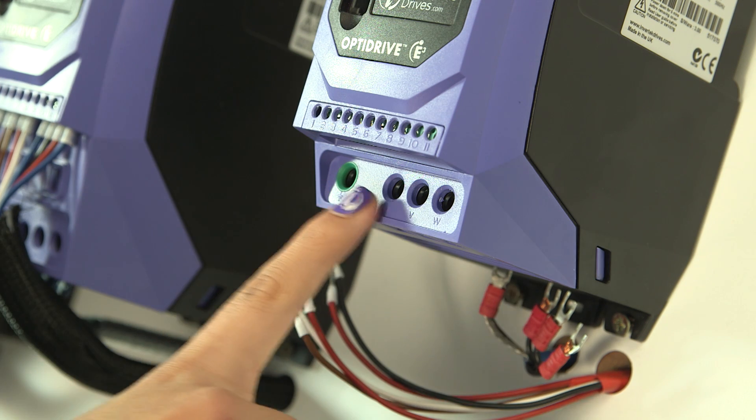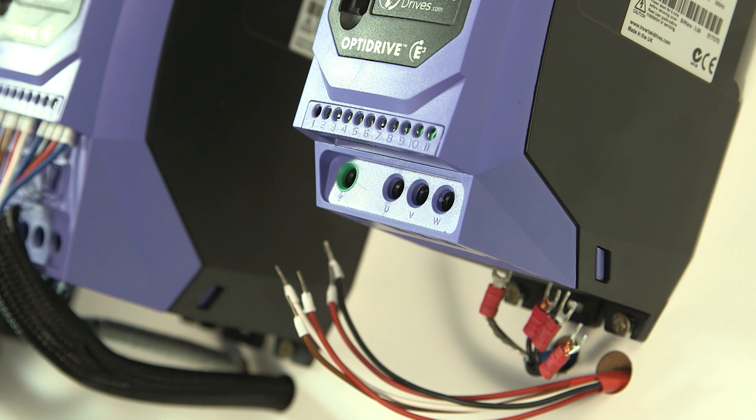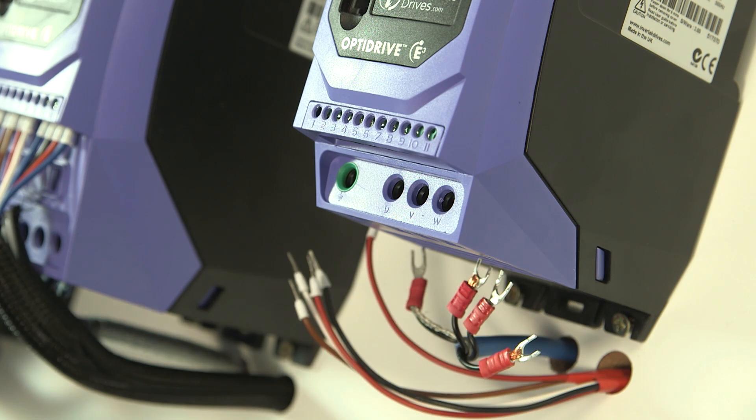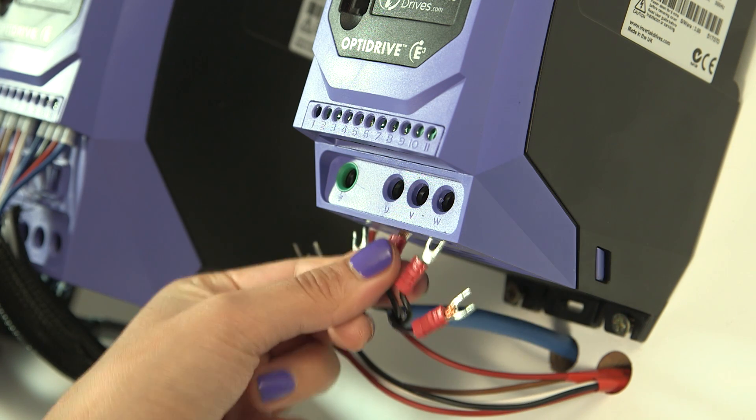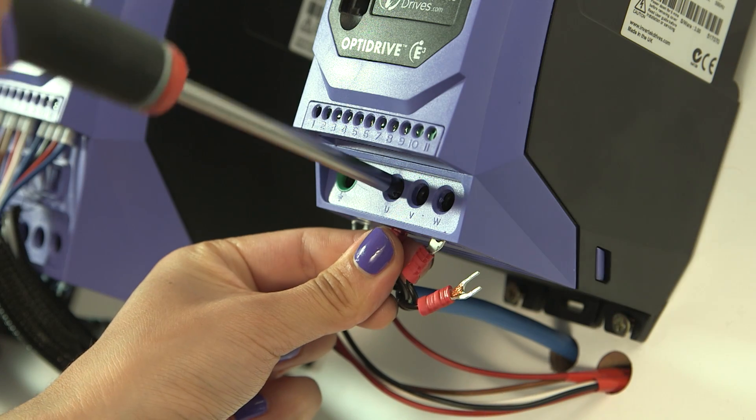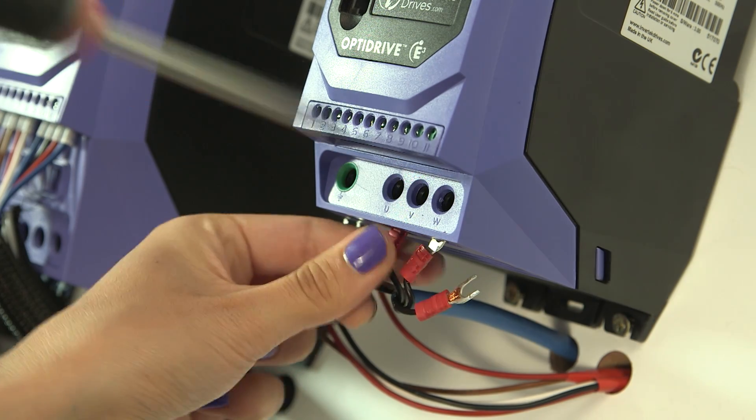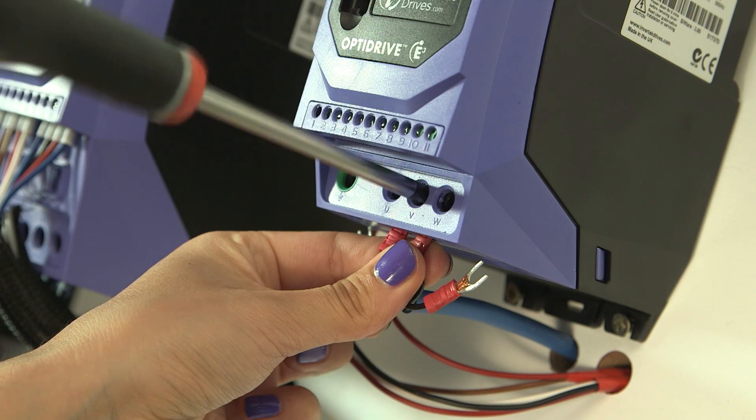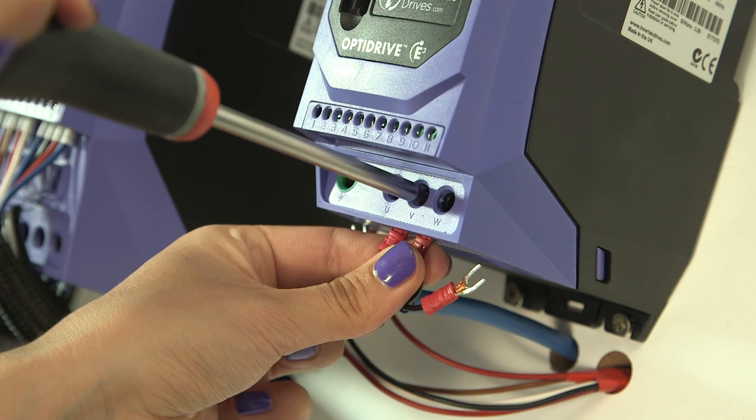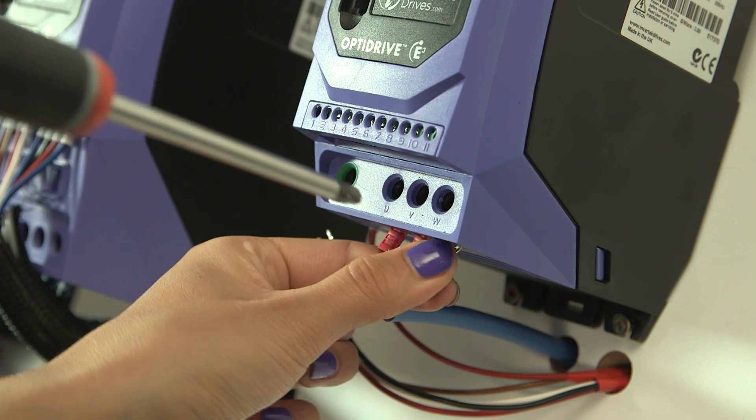Connect the motor to the E3 at the bottom. Many motors can be connected in star or delta for different supply voltages. Check the motor is correctly connected for the output voltage of the drive. In this case, the motor is delta connected for 230V three-phase operation. Connect U, V, and W to the corresponding motor terminals.